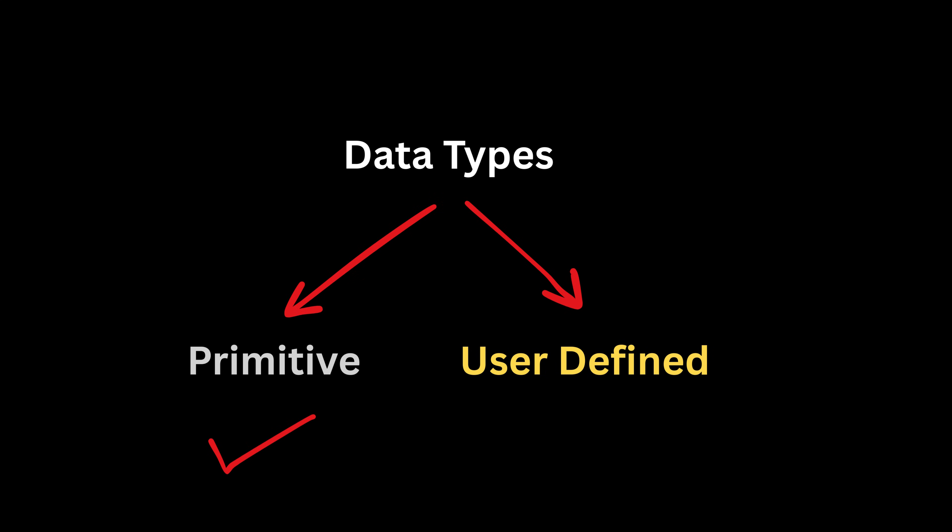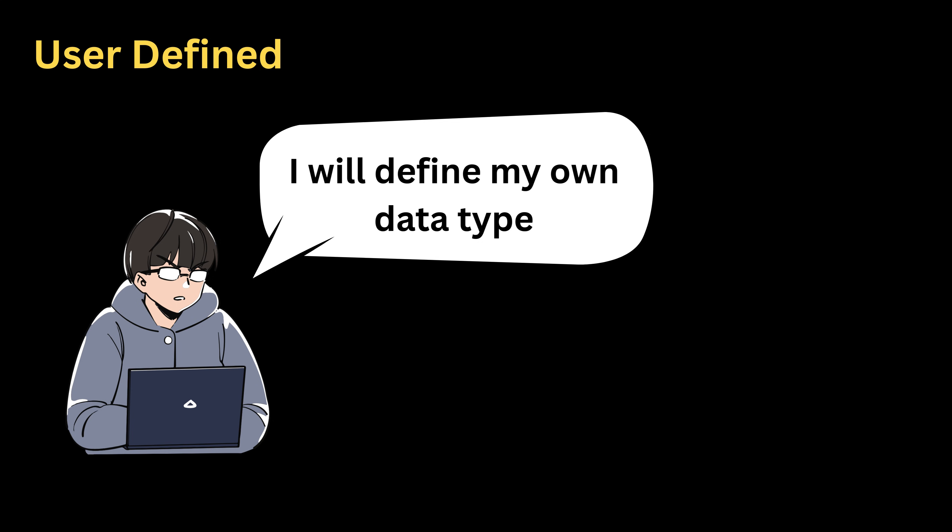After primitive data types, most programming languages also allow user-defined data types. A user-defined data type is a type created by the programmer by grouping existing data types together into a single meaningful unit. It allows us to represent more complex data models. Common user-defined data types include structures, classes, enumerations, and unions.